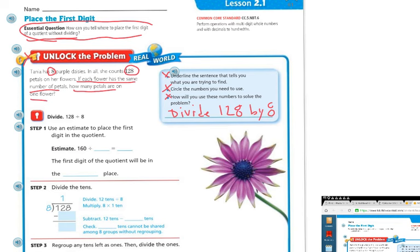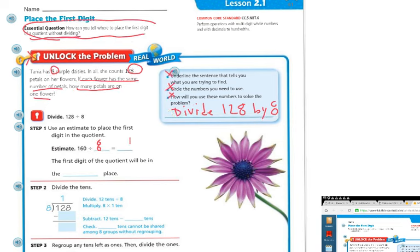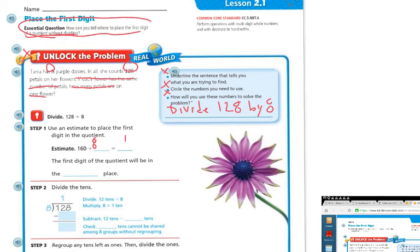I can estimate 160 divided by 8 is going to be 20. The first digit of the quotient will be in the tens place, because I have 20 — it's going to be in the tens place.